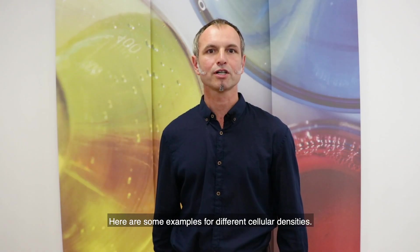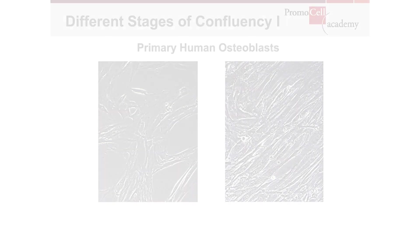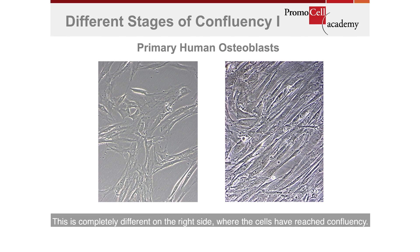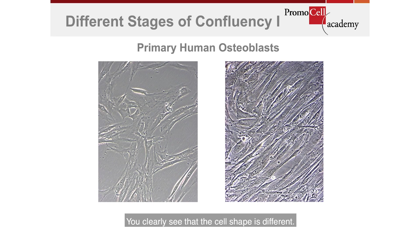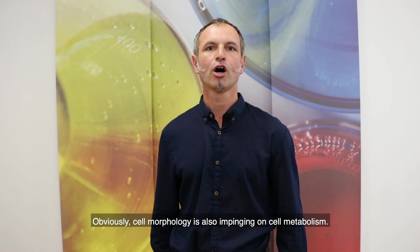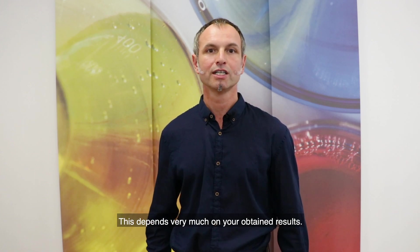Here are some examples of different cellular densities. With the primary human osteoblasts, you see on the left side a nice density — there is enough space to grow. On the right side the cells have reached confluency; the cell shape is clearly different, more outspread on the left and more condensed on the right. Cell morphology impacts cell metabolism and therefore your experimental results.